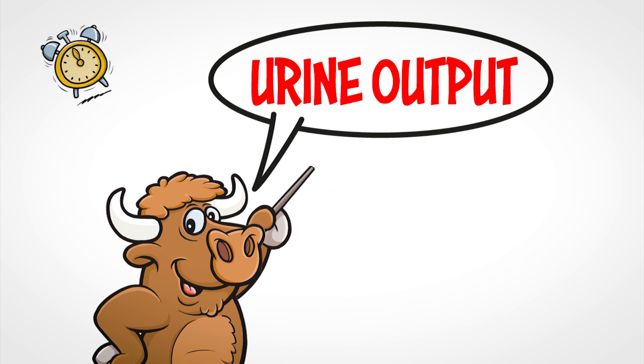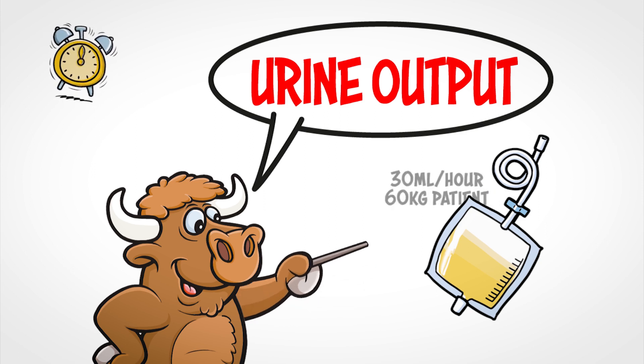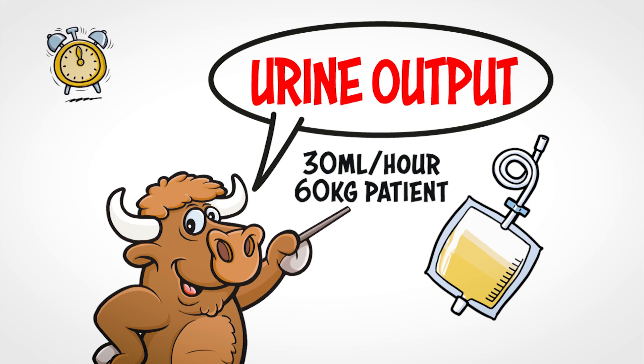U is for urine output. This is a marker of systemic perfusion which could be impaired by sepsis. You should consider catheterisation but as a minimum, urine output should be recorded hourly. It is concerning if the urine output drops below half a ml per kilogram per hour. For example, 30 mls per hour for a 60 kilogram person. This needs to be flagged up urgently as the patient may be heading towards septic shock with multi-organ failure including acute kidney injury.